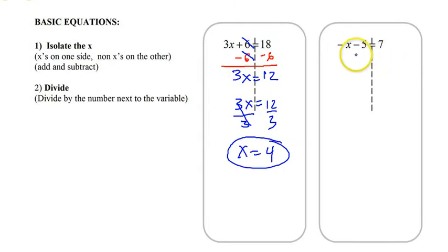So like over here, we add or subtract. So on the x side, what's being added or subtracted? The 5. Good. So we add a 5. That way they'll cancel. And we're left with negative x equals 7.